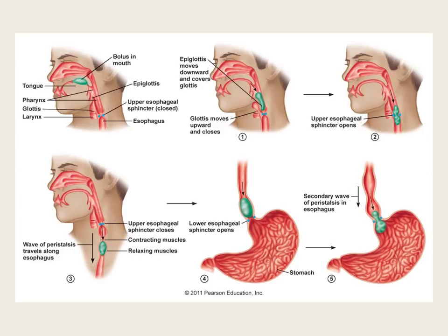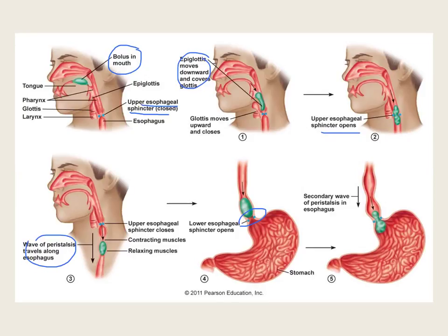In swallowing, the food bolus is in the back of the mouth and the sphincter muscle of the esophagus is normally closed. As everything sets up — the epiglottis moves down and the glottis closes off — the sphincter opens and the wave of peristalsis sends food down through the esophagus toward the stomach. There is also a sphincter at the other end of the esophagus that must open to let food into the stomach. Throughout this tube there are sphincter muscles that close things off so that things flow basically one way.